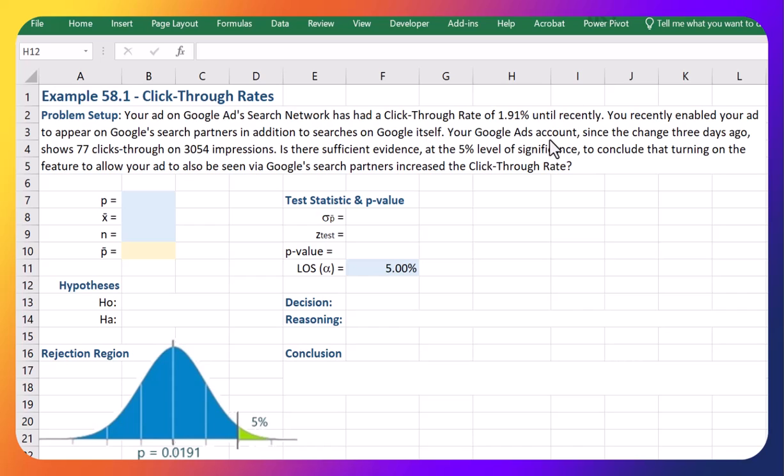So let's say we went into our Google Ads account and since this change three days ago we have a click-through rate of 77 out of 3054 impressions.